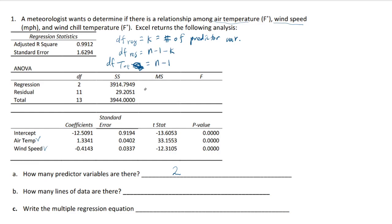So that if you add them together, the k's cancel and you end up with n minus 1. Here n is the number of lines of data, or data pairs. Actually it's not data pairs, it's a data triple, so each line of data should give you air temperature, wind speed, and wind chill temperature.